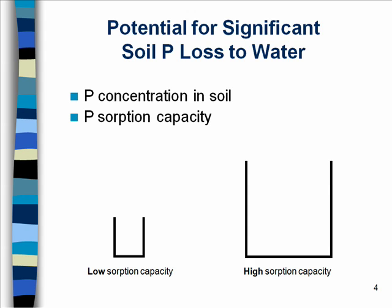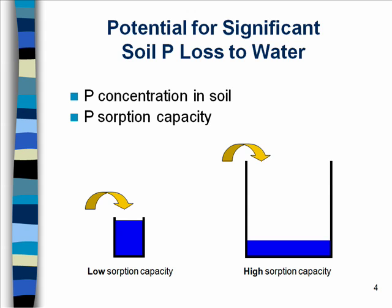The potential for significant soil P loss to the water depends on two factors. The first is the concentration of phosphorus in soil as indicated by Melich-3 extraction. The second — which many people don't consider — is the sorption capacity of the soil. If you add the same amount of phosphorus to two soils with different sorption capacities, the soil with low sorption capacity will allow phosphorus to leak out to the water system, while the soil with high sorption capacity can still hold more phosphorus.